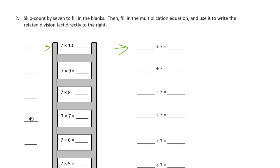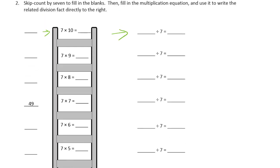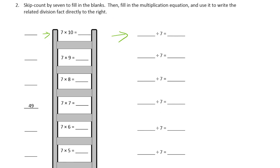So here we have 7 times 10, right? That's 70. 7 times 10 is 70. 70 divided by 7 is 10. And then we're going backwards. Because here's a 49, right? We need 7 times 9. So that's going to be 63. It's 1 less 7. 63 divided by 7 is 9. See? Because it's our quotient.